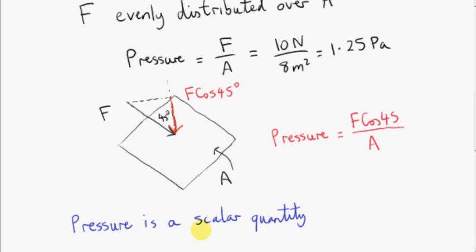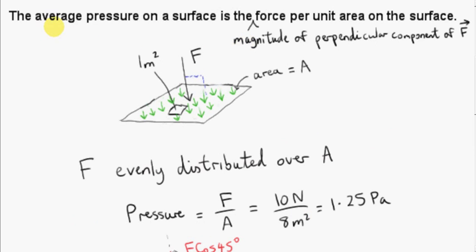Finally, we need to note that pressure is a scalar quantity. More accurately, in our definition, the average pressure on a surface is the magnitude of the perpendicular component of vector F per unit area — per meter squared. So we are only interested in the amount of perpendicular force acting on a square meter. The force associated with the pressure has direction — force is a vector quantity — but when we're talking about pressure, we're only talking about the amount of force per square meter. So there's no direction associated with pressure.